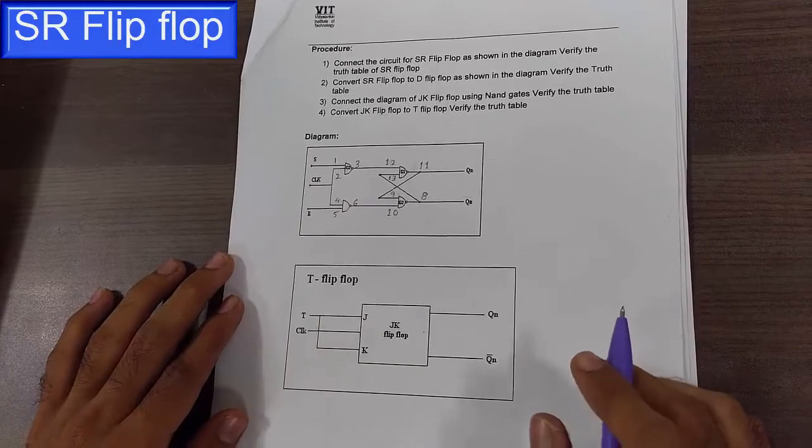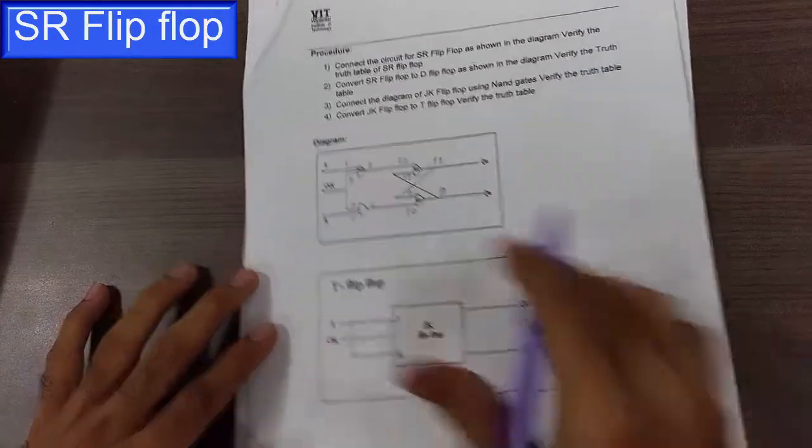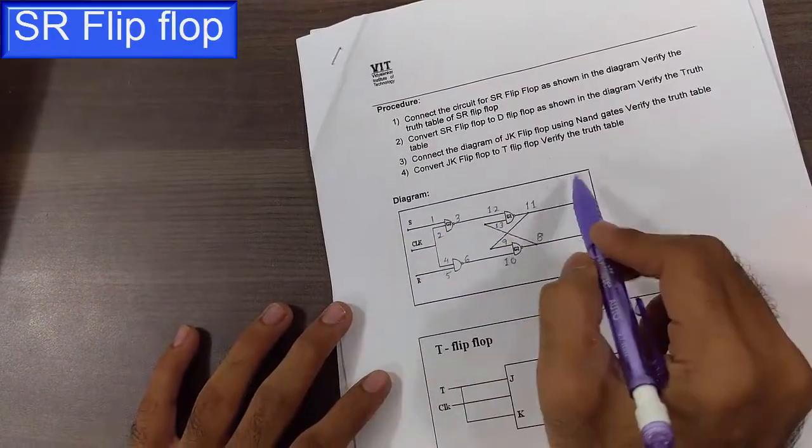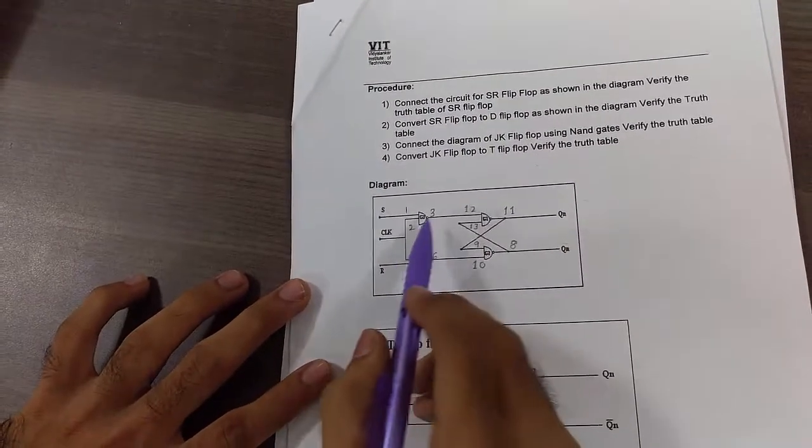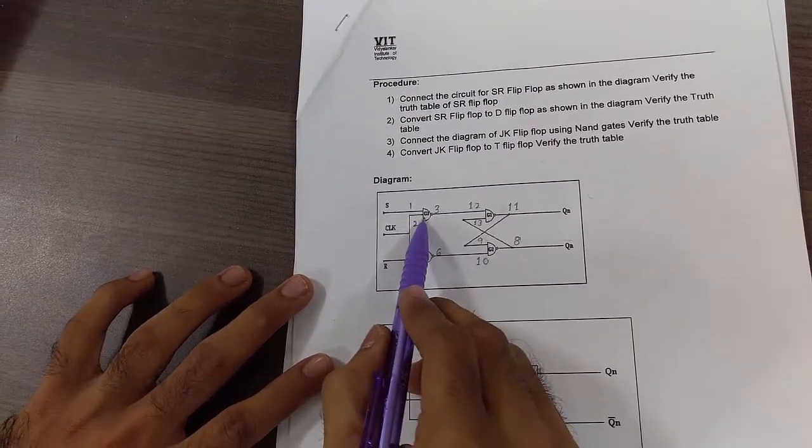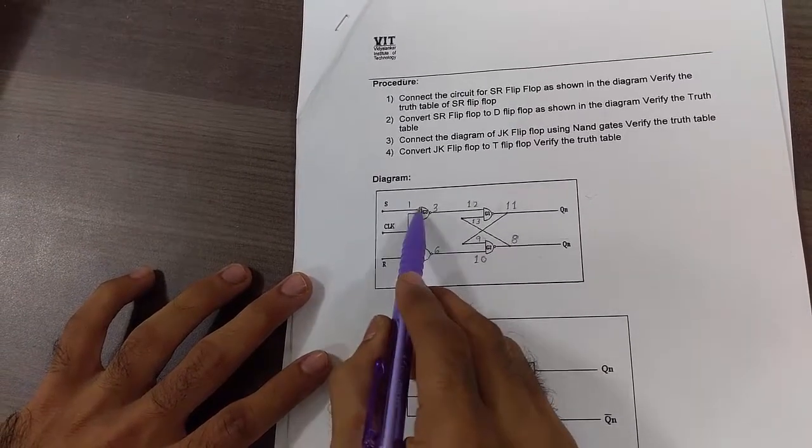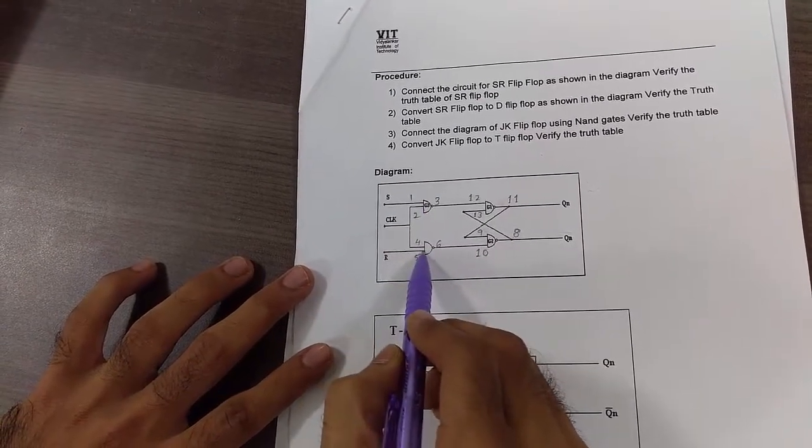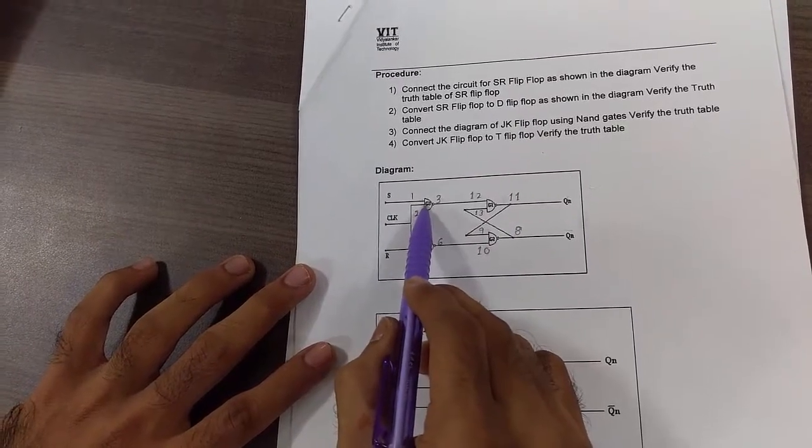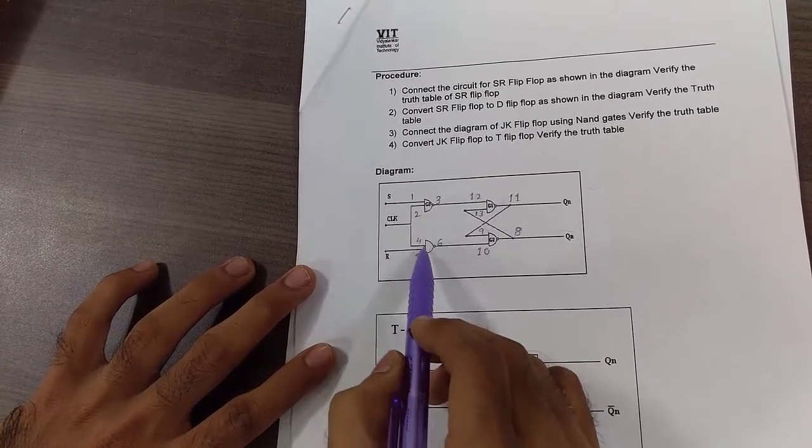Let's first understand how to construct SR Flip Flops using NAND gates. This is the basic circuit diagram of SR latch using NAND gates. We connect the first gate of 7400 IC and give S input to it and R input to the second gate. And clock is given simultaneously to one input of gate 1 and one input of gate 2.